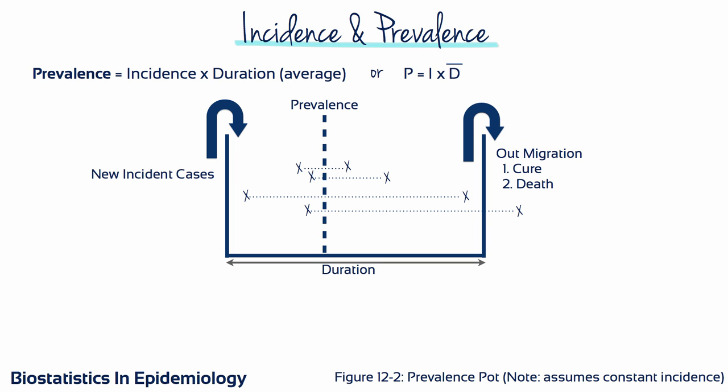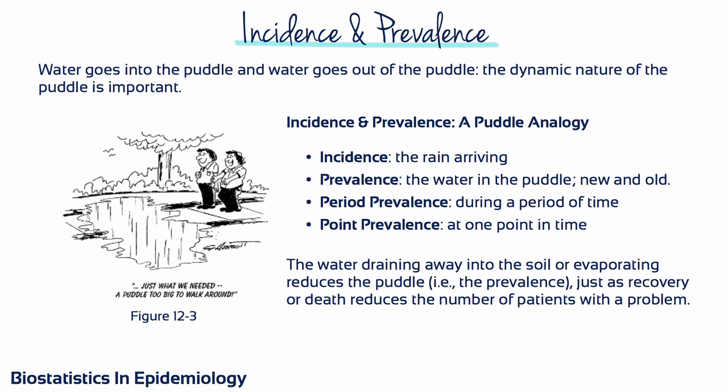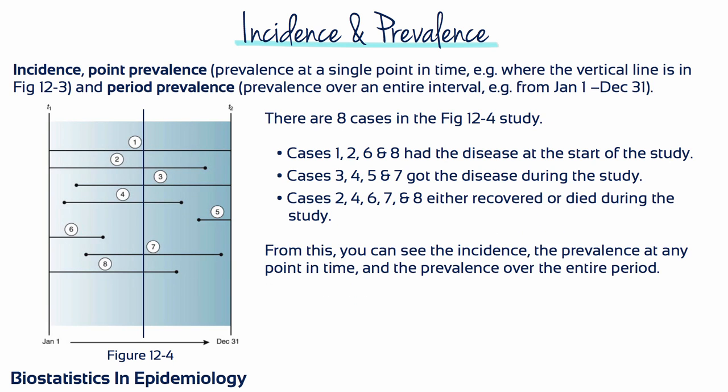Prevalence equals incidence times the average duration of the disease. Over the course of a study, each new case or incident goes into the prevalence pot. Each case in the pot can either remain for the duration of the study or come out, because the person dies or recovers. The rain coming into a puddle and the water evaporating are another way to think about incidence and prevalence. An individual can represent an incident only once, but can be a prevalent case at a number of points in time. For example, case number three is a prevalent case both at midyear and at the end of the study on December 31st.